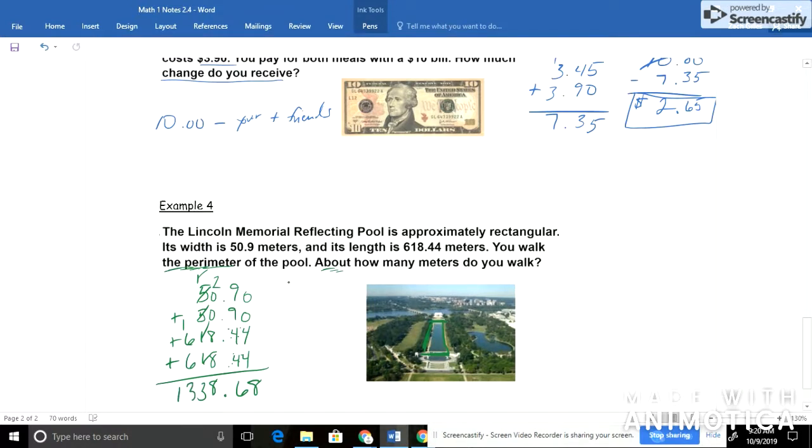So I get 1338.68. Since it said about, I'll round that up to 1339. And don't forget about your label. We had meters.